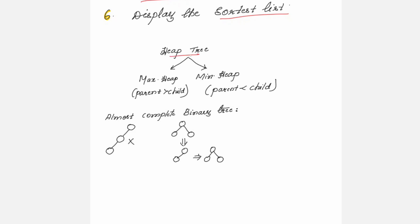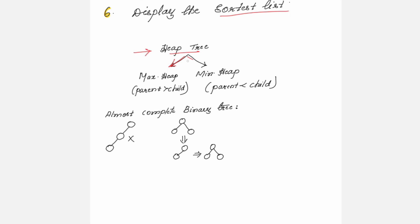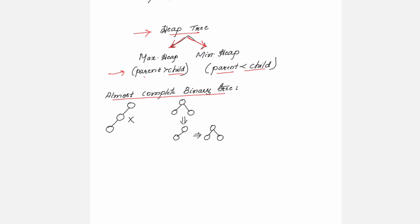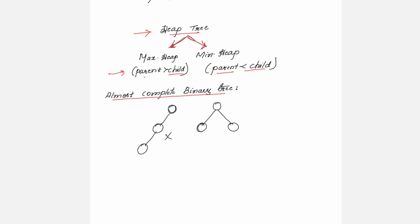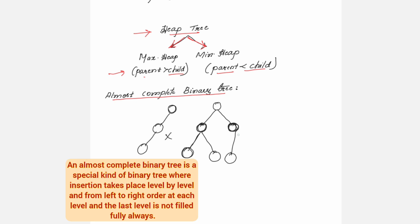This algorithm makes use of the data structure called heap tree. To sort elements you form either a max heap or a min heap. In max heap the parent node is greater than the child node; in min heap the parent node is less than the child node. An almost complete binary tree means at every level you fill elements left to right — place the left node first, then the right node, completing each level before moving to the next.